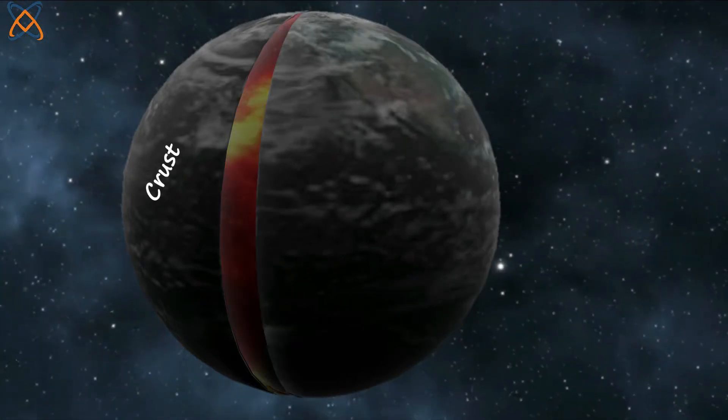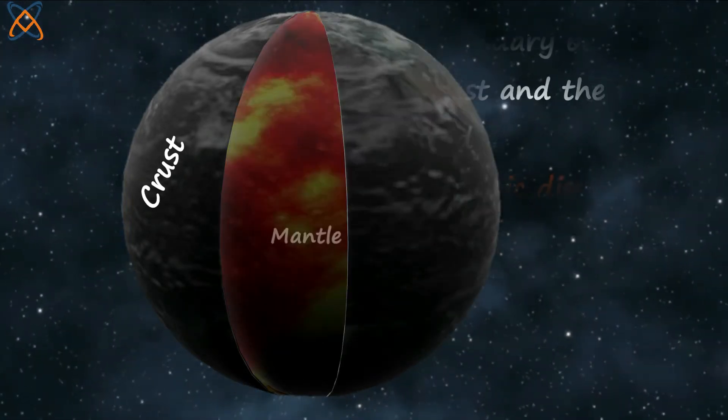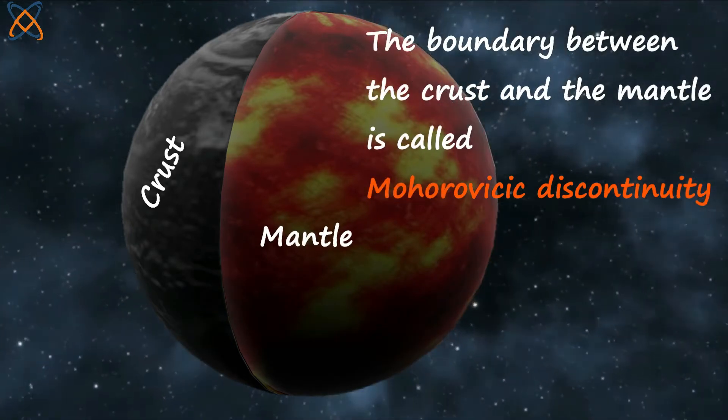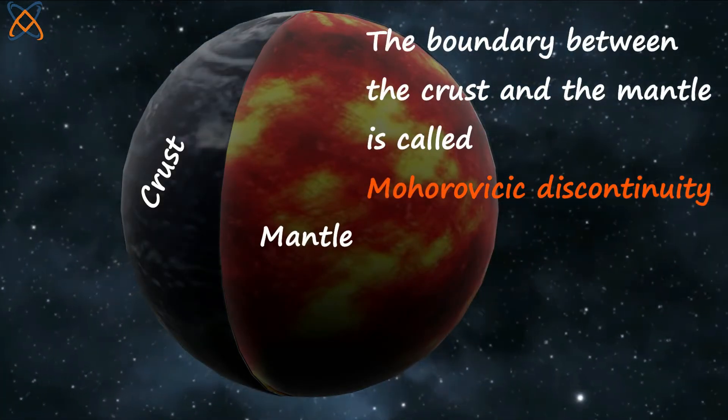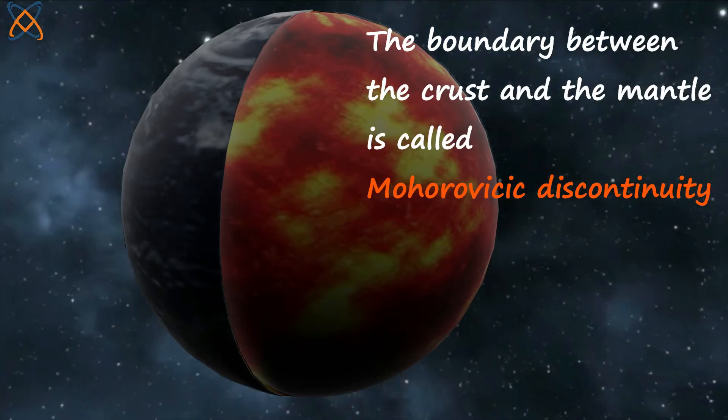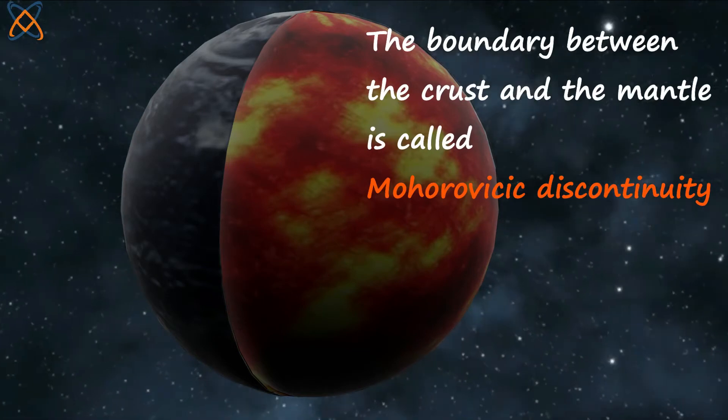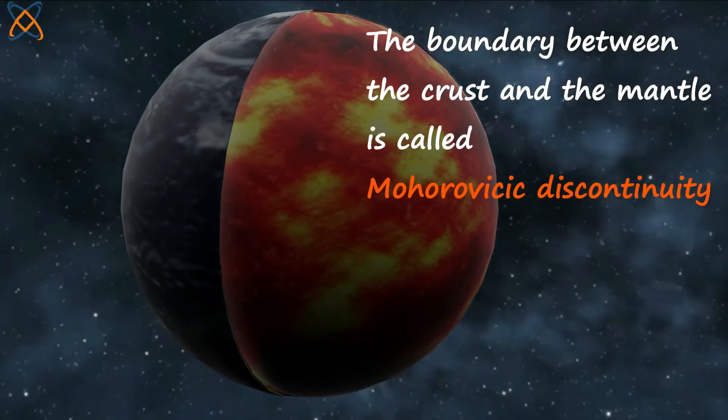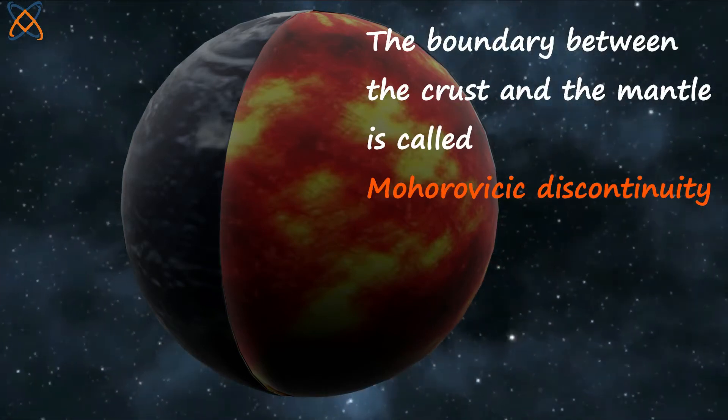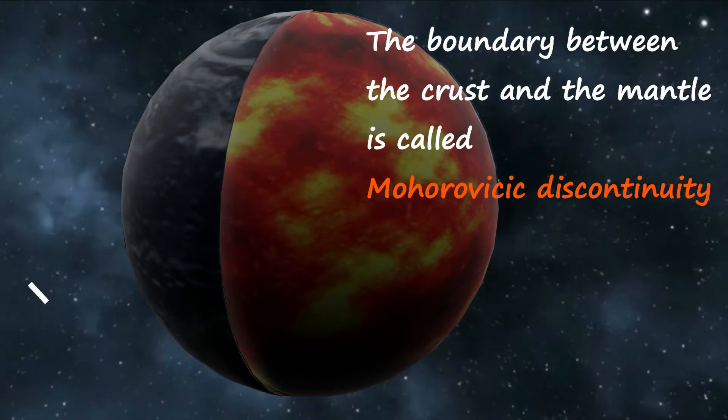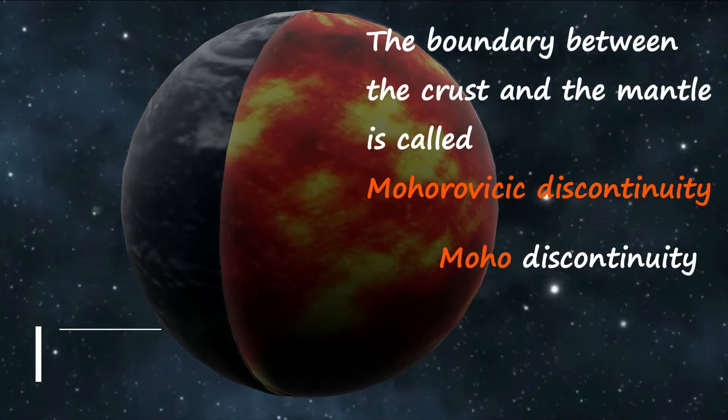The mantle comes after the crust. The boundary between the crust and the mantle is called the Mohorovicic discontinuity. I had to cram that before pronouncing. It's kind of close to the name of one of my favorite football players. It is a Croatian name after the seismologist that discovered it. It is simply called Moho discontinuity.